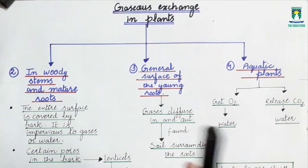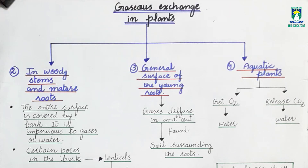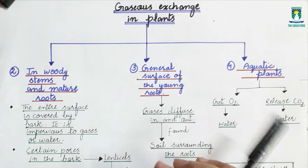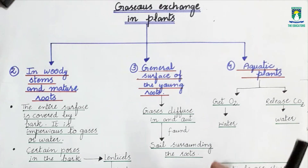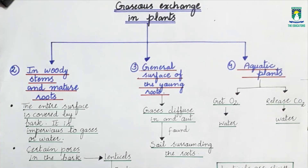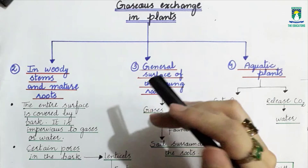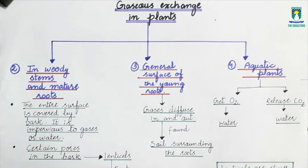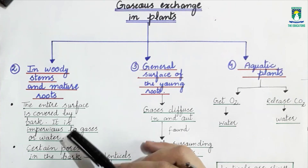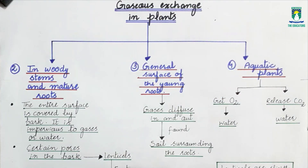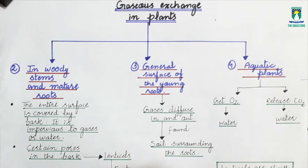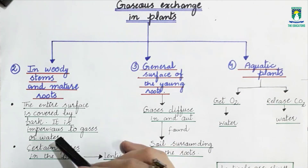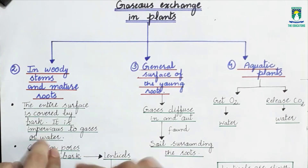In woody stems and mature roots, unlike leaves and young stems which have stomata, the structures for gaseous exchange are different. Have you ever observed the outer side of a tree? It is quite hard. That outer layer is called bark, and it is present on the outside of woody stems like trees.